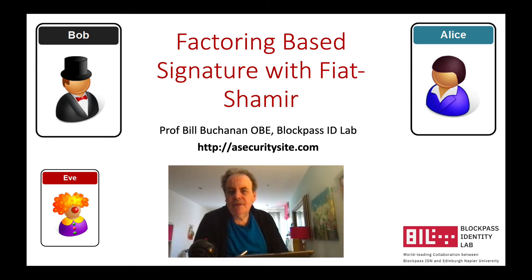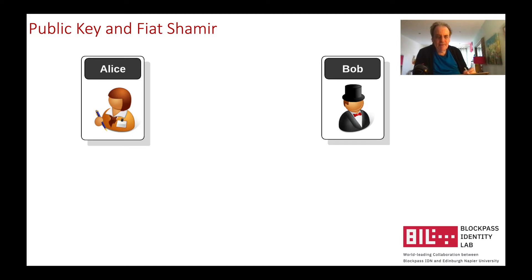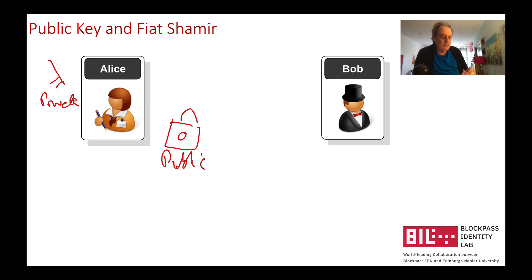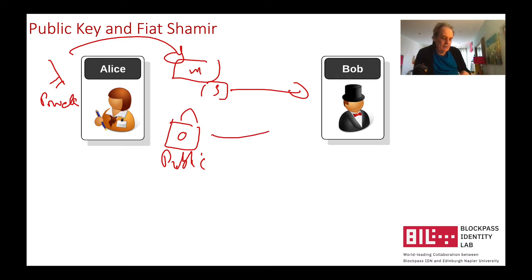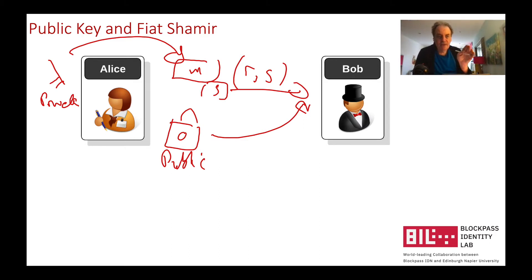Let's have a look at factoring-based signatures using the Fiat-Shamir method. With public key cryptography, we have a private key and a public key. We take a message and sign it with our private key, then send the signature and prove it with the public key. With something like ECDSA, we create two values R and S, which prove the signature was signed with Alice's private key.